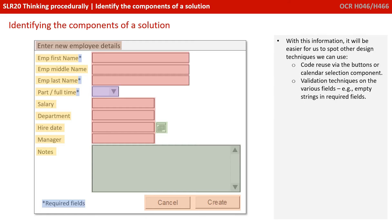With this information, it can be easier for us to spot other design techniques we can use. We could use code reuse via the buttons or the calendar selection component. And we can start to spot various validation techniques we might need — for example, not allowing empty strings on the mandatory fields.